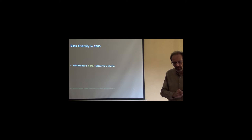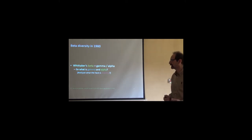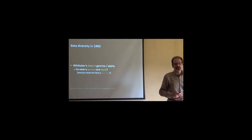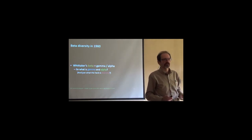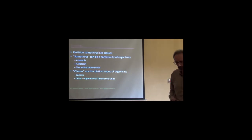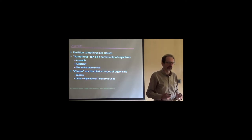So Whitaker actually defined the concept of beta diversity as a quotient between the large scale diversity, gamma diversity in his terms, and the alpha diversity, which is the diversity at a local scale, at a small scale. So let's say that if we had a mountain range, the gamma diversity of that mountain range would be the number of species in the entire mountain range, whereas the alpha diversity would be the diversity you'd see at each valley, each mountain top, each whatever.